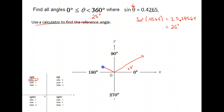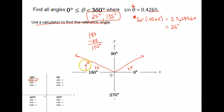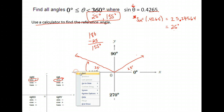Sine is positive in the first quadrant, and notice sine is also positive in the second quadrant. So we want that same reference angle of 25 degrees but in the second quadrant. It's 25 degrees short of 180, so we go 180 minus 25 and we get 155 degrees. So there are two angles between 0 and 360 that have a sine of 0.4265: they are 25 and 155 degrees. The first step is to use your calculator to find the reference angle, and then find the other angle with that same sine — checking whether the value is positive or negative to determine the correct quadrant.